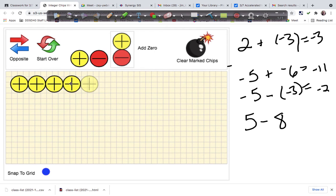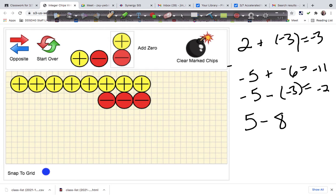So one, two, three, four, five. And I don't have eight to remove. So what I'm going to do is add three zeros. One, two, three. So now I see eight positives, but only because it's five. This is really five, five plus zero plus zero plus zero.